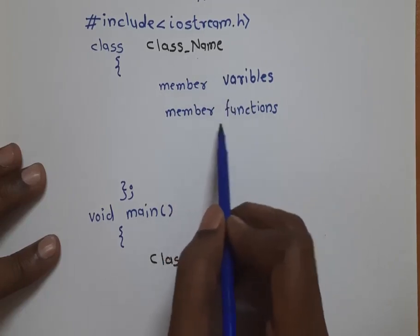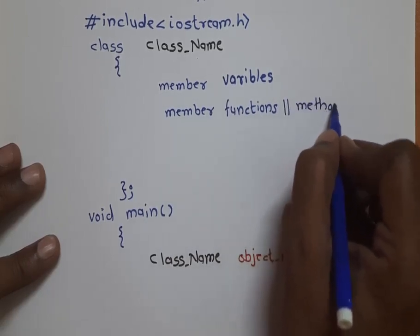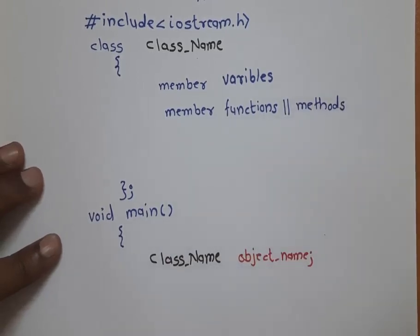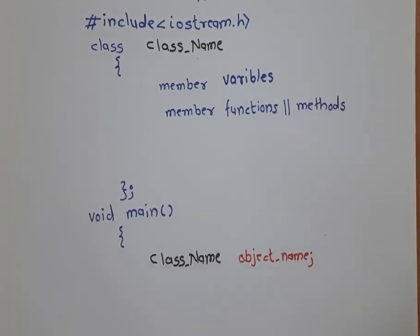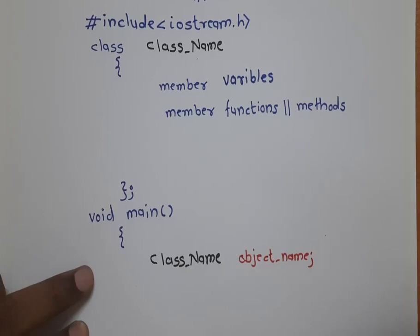Sometimes member functions are also called methods. Generally the word 'methods' is used in Java, but you will see it in some books or videos. The functions written within a class are considered methods, but here I prefer to call them member functions. This is the overall structure of your C++ object oriented programming system.